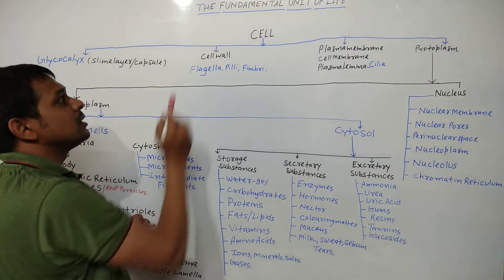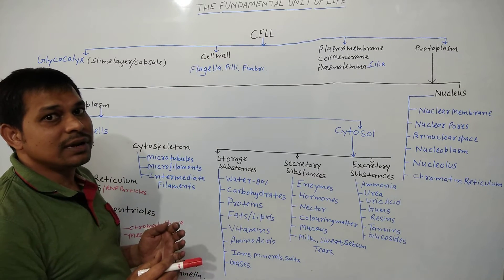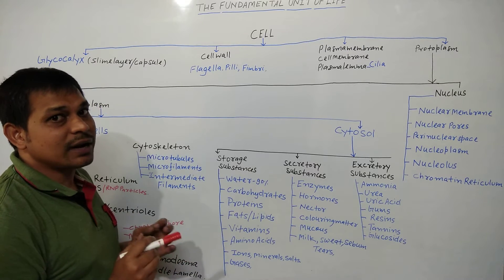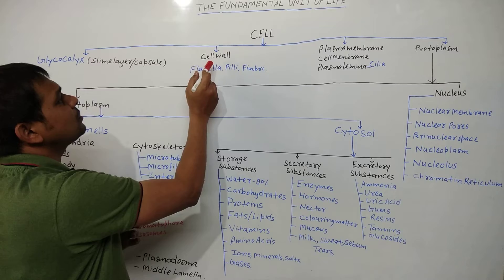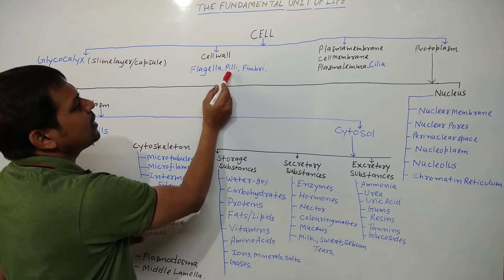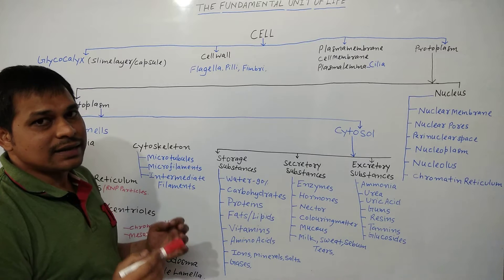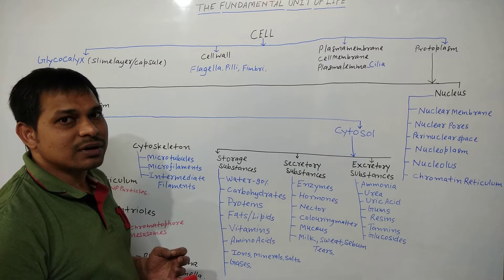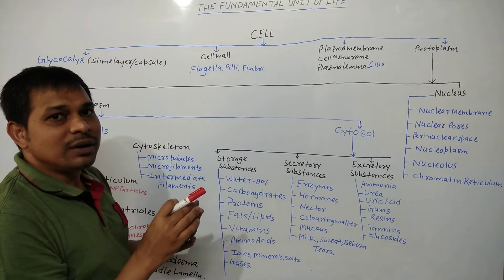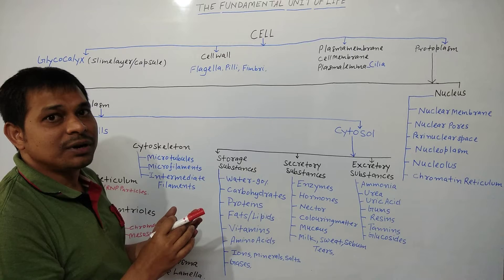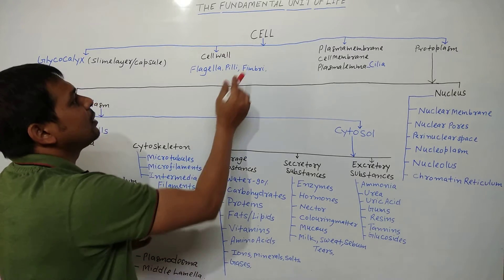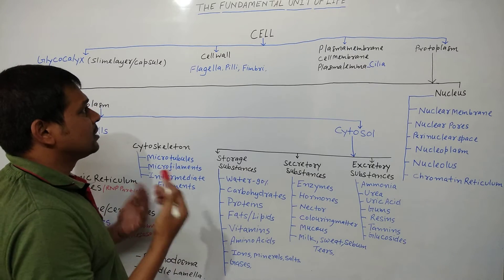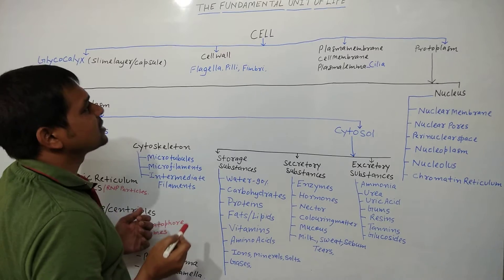In the case of plant cells, the cell wall is mainly made up of cellulose. In bacterial cells, it is made up of peptidoglycan or pseudopeptidoglycan, also called murein. In fungal cells, it is made up of chitin. The cell wall is also the outermost protective covering in plant, fungal, and bacterial cells. From the cell wall, flagella, pili, and fimbriae arise, helping in movement, locomotion, attachment to a substratum, and conjugation.